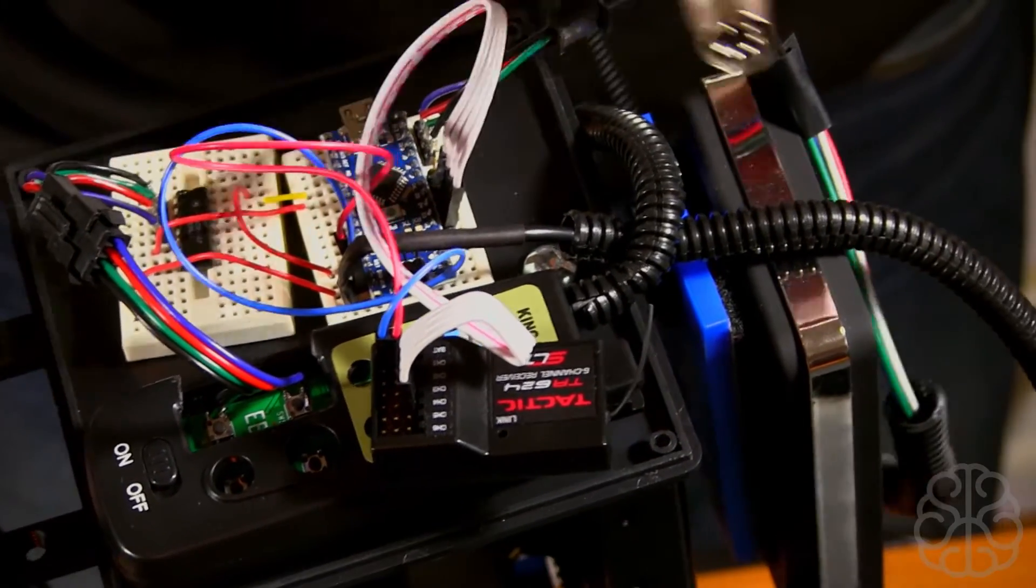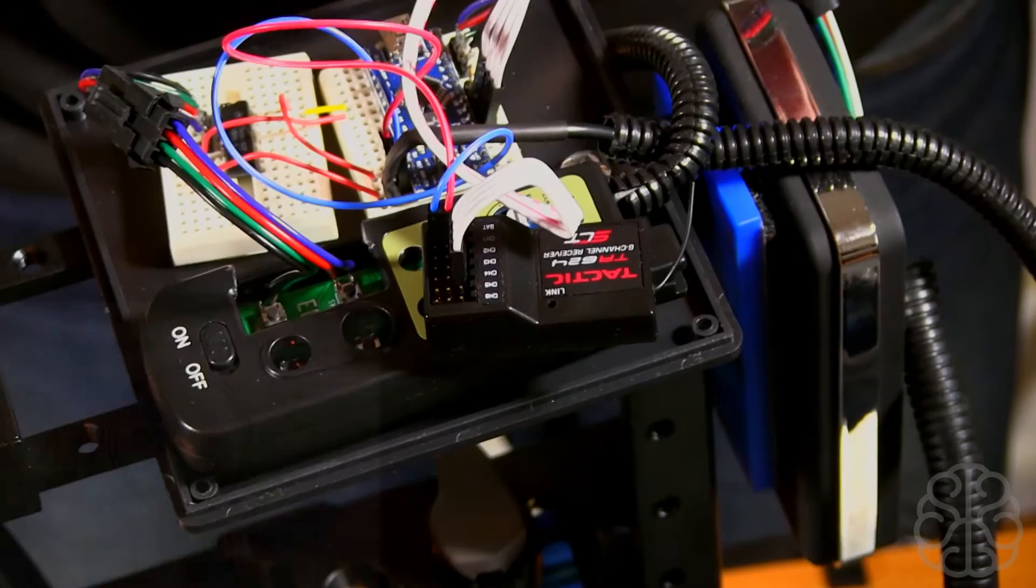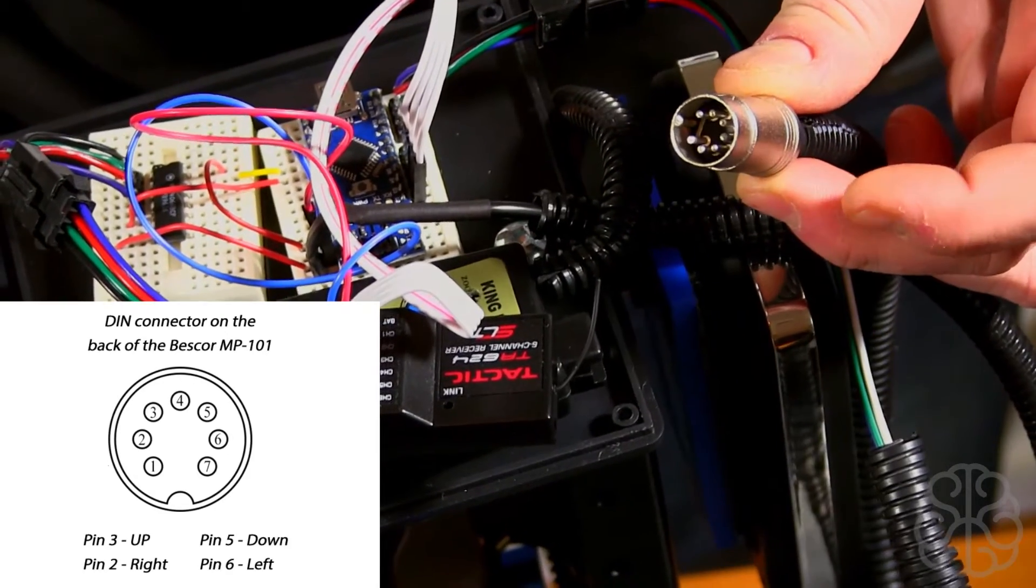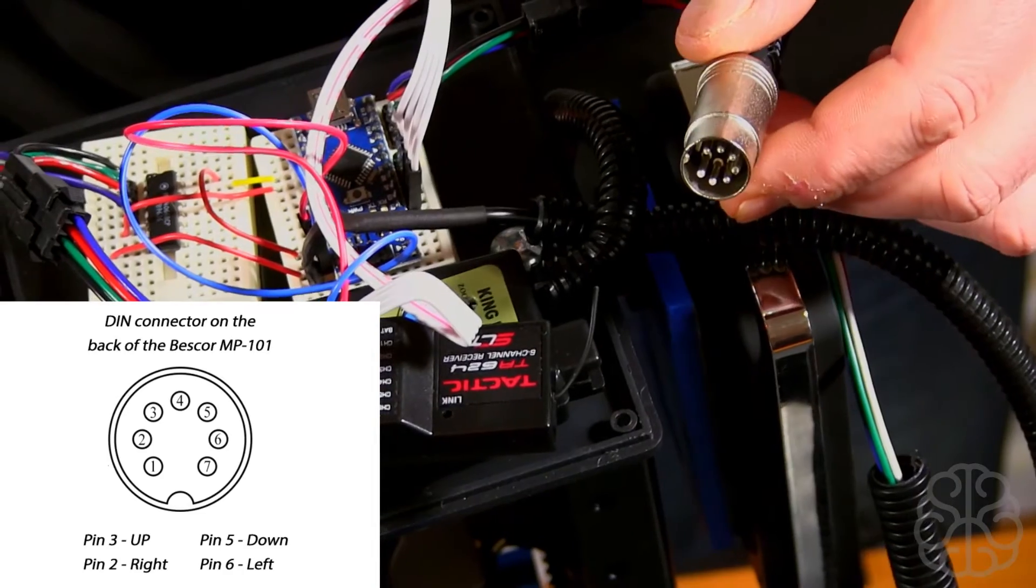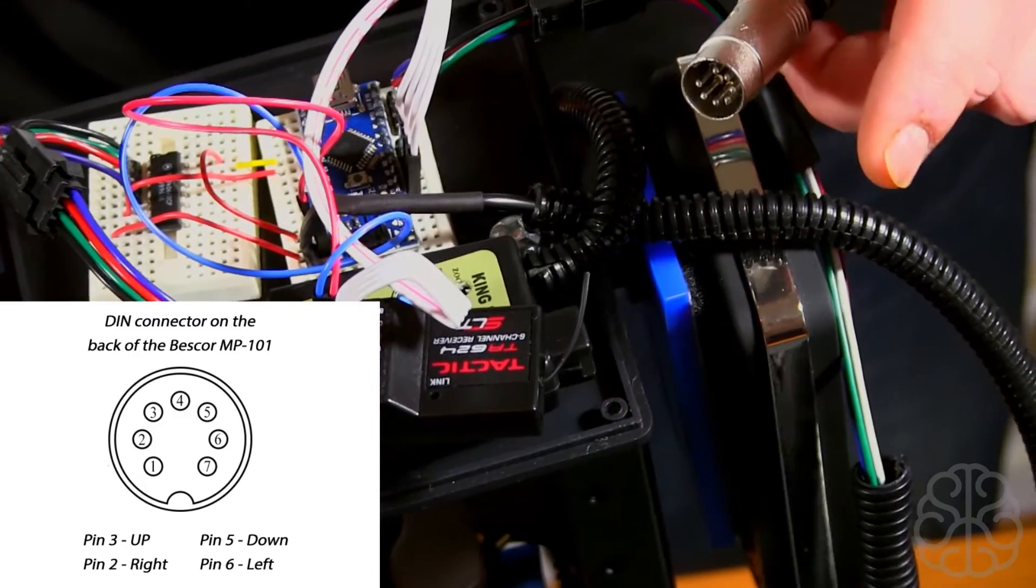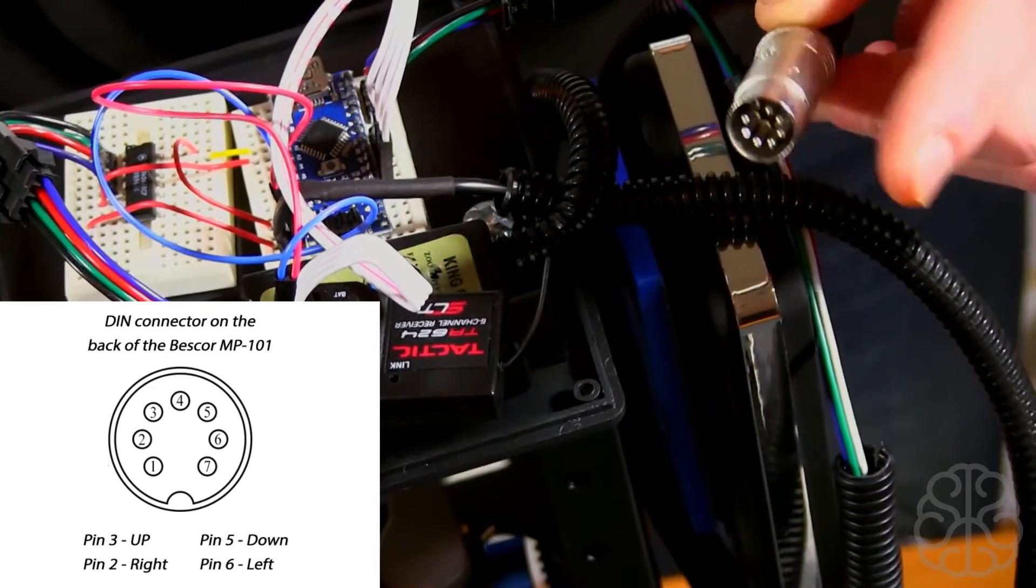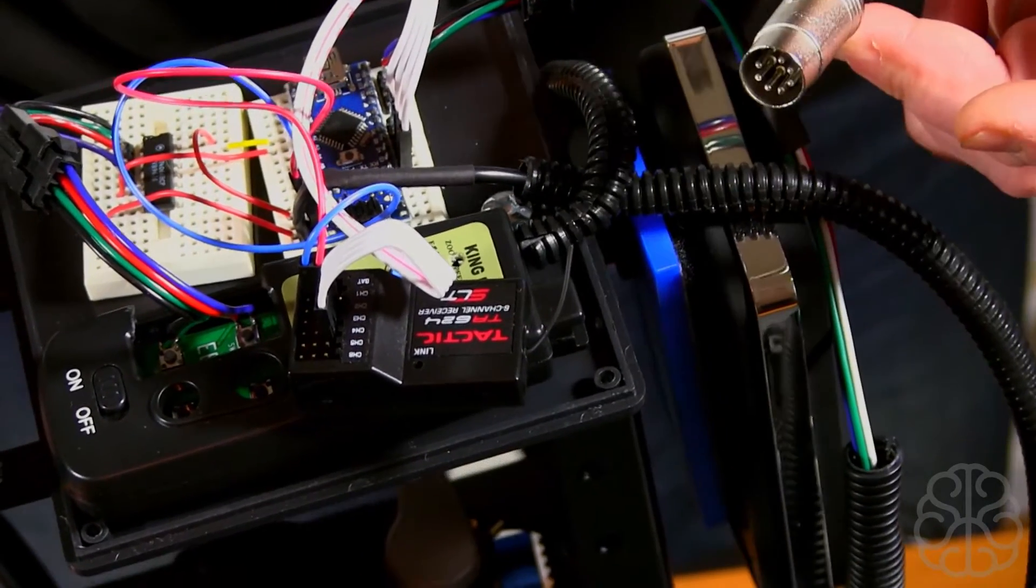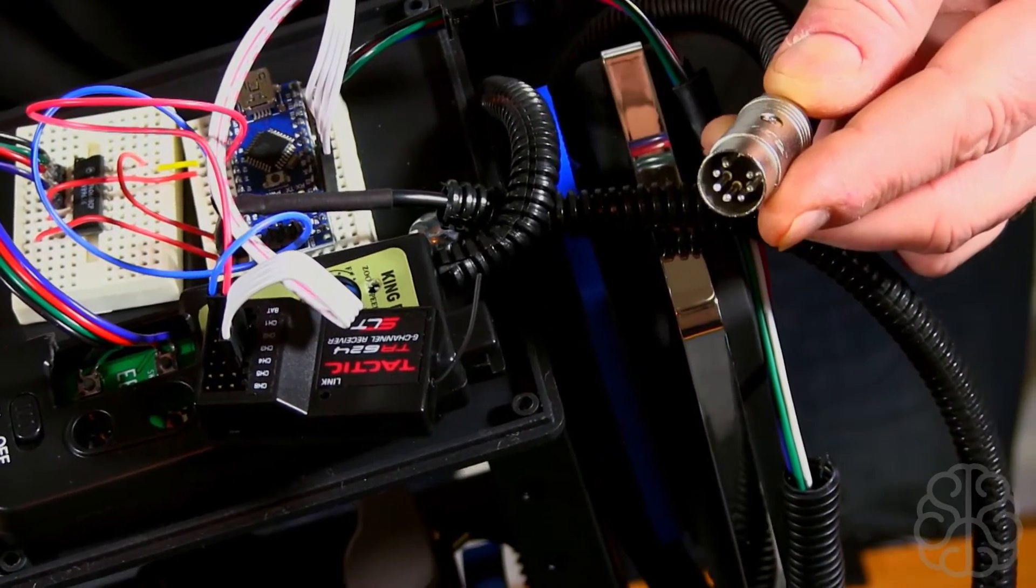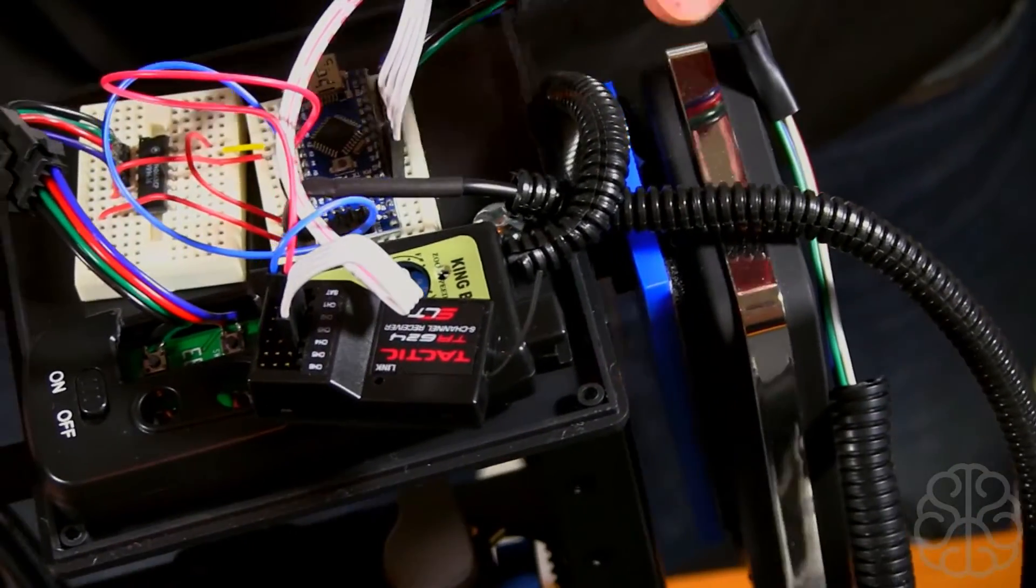After that, we have our connector. This guy goes to the Bestcore MP-101. We got four pins. All this does is send the pin high to activate left, right, up, down. You'll see on the screen right now the connections that I used to control the MP-101. The connector on the screen represents the connector on the Bestcore, not the connector that goes into the Bestcore.